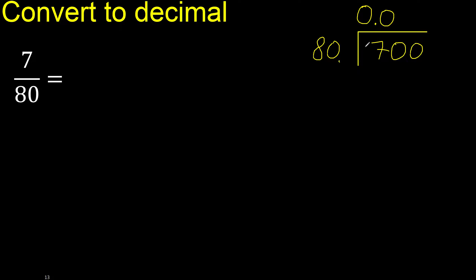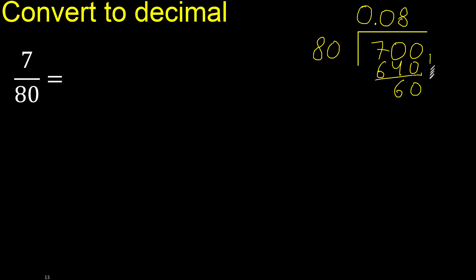80 multiplied by 9 is greater, so try 8 — 80 by 8 is not greater, so subtract. There is no remaining number, so complete with 0. Always complete with 0 to get 600. Now find which number to multiply 80 by — 80 by 8 is greater.